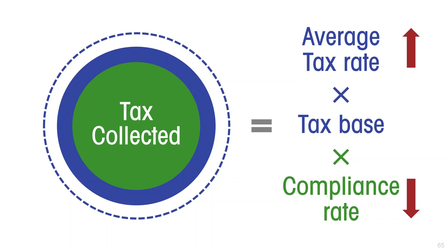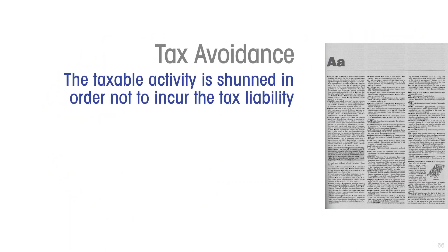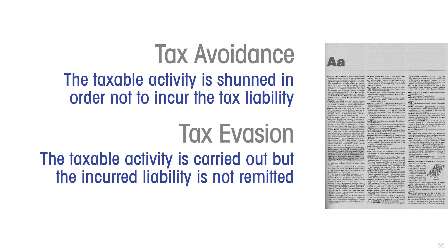To capture both of these we make a distinction between tax avoidance and tax evasion. Tax avoidance is where the taxable activity is shunned in order not to incur the tax liability — this is legal. For example, if a tax is levied on petrol and I don't drive my car and therefore don't purchase any petrol, then I don't owe the tax on petrol. Tax evasion is where the taxable activity is actually carried out but the incurred liability is not remitted. Tax evasion is illegal.